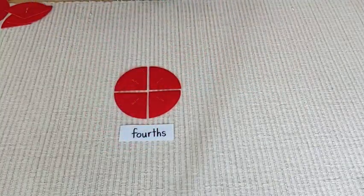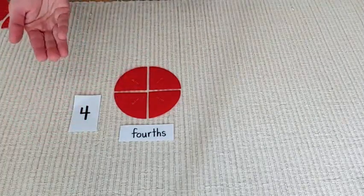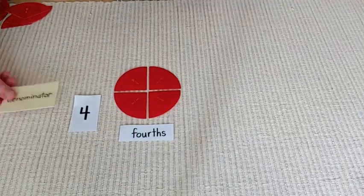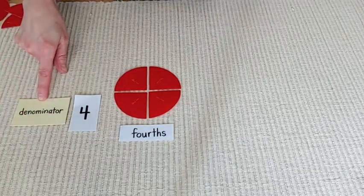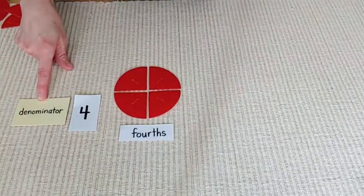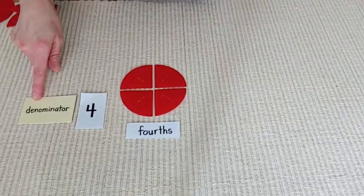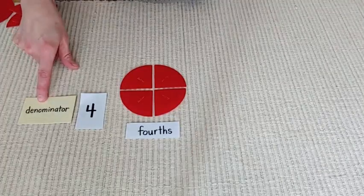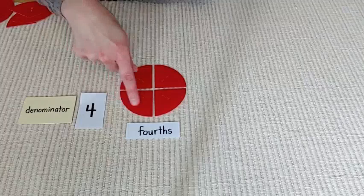And our last name is the fourths because, just like you have a last name, fractions have last names too. And there's a special word for the last name of a fraction. It's called the denominator. And the fancy or funny way of remembering this is that the name of the family is called the denominator. And the name of this family is the fourths because there are four parts.